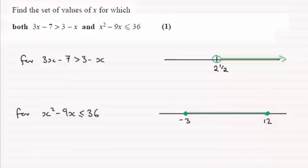So what we're looking for then, are values of x which are common to both these sets. And that would mean that we need anything greater than 2 and a half, but less than or equal to 12. It will be in both of these sections.